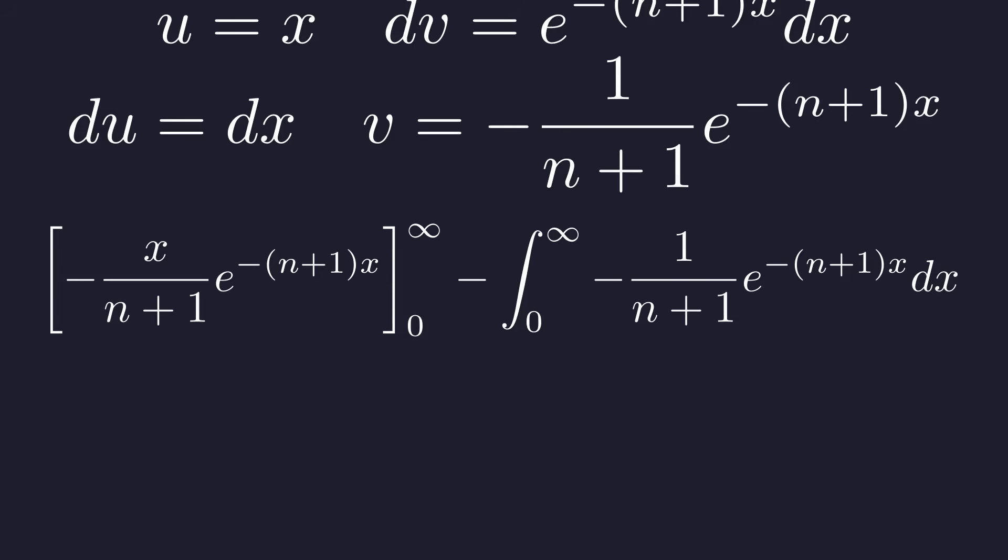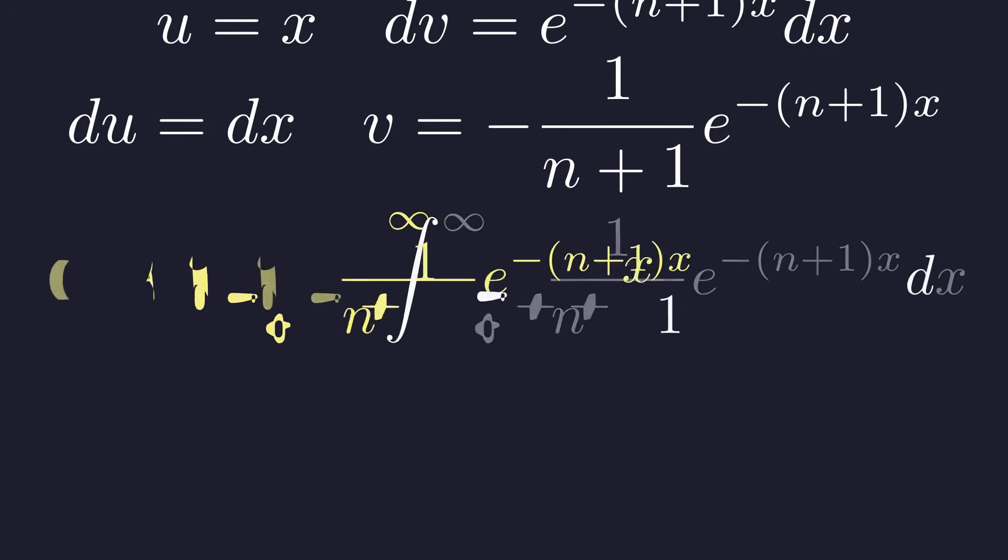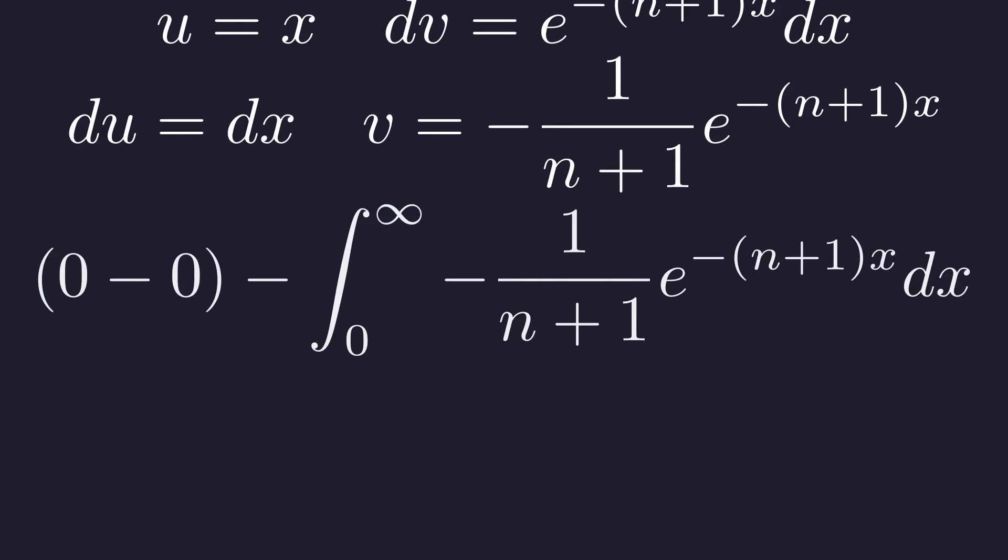Applying the integration by parts formula gives us this. Let's look at this first term. As x goes to infinity, the exponential decay completely dominates, so this goes to 0. And at x equals 0, well, x itself is 0, so this term is also 0. So that boundary term is just 0, and we're left with this integral.